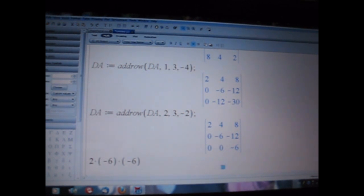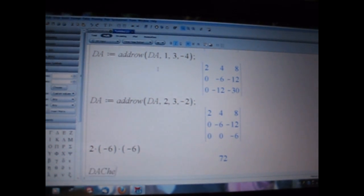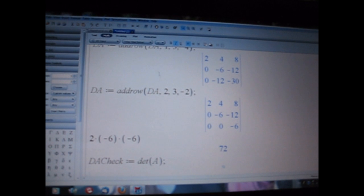And this is a quick easy example. However, another nice thing you can always do whenever you are manually getting a determinant, just to make sure you haven't made any small errors, you can always use the function where you can get the determinant directly in Maple. And we will do DA check to check our work, and we will do DA check is equal to determinant A. And here you will see we come back to 72.